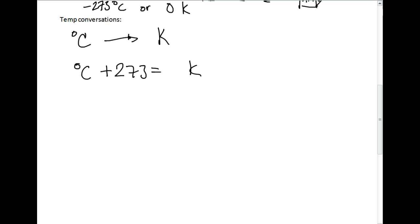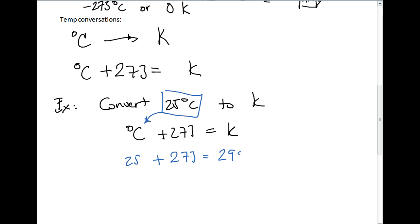So here's an example problem. Convert 25 degrees Celsius to Kelvin. Okay, so this is a pretty easy problem. We're going to use the formula. Degrees Celsius plus 273 equals Kelvin. I'm just going to take the value for 25 degrees Celsius, and plug it in right there. So I'm going to get 25 plus 273, and it's going to give me 298 Kelvin as an answer.